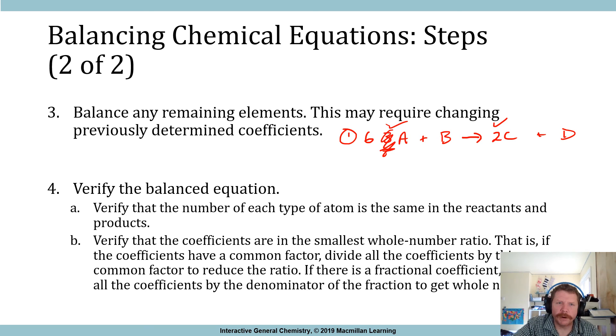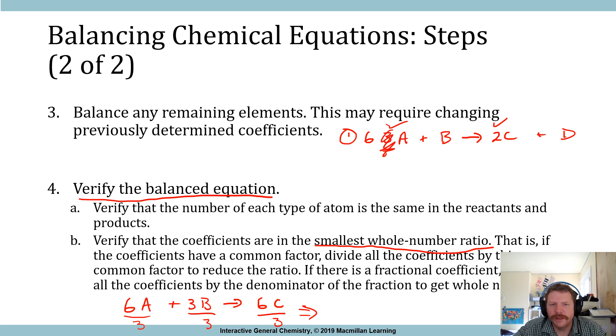So then once you've done that, what you want to do is you always want to verify the balance equation, so you want to verify the number of each type of atom on the reactant side and the product side are the same. You want to verify that the coefficients are in the smallest, this is a very important key, smallest whole number ratio. That is, if the coefficients have a common factor, divide all the coefficients by that number, or by that common factor to reduce the ratio. So if there is a fractional coefficient, if there is a fractional coefficient, you want to adjust that, so that's a whole number. So if you saw something like this, 6A plus 3B yields 6C. Well, that has a common factor. You can divide this by 3, all of those by 3, and then you get the common ratio of 2A plus B yields 2C.